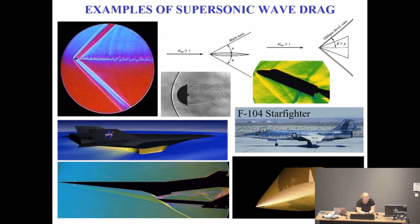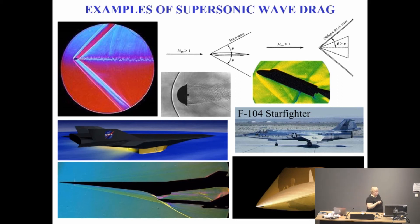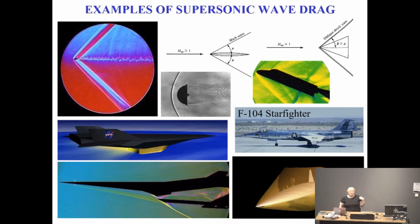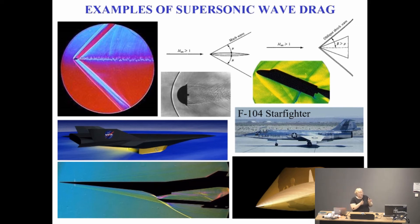What happens is that in subsonic flows, the information that the boat is coming is actually known ahead of time — hence why you can see this bow wave. The faster and faster we go, it actually doesn't have much effect. In other words, by the time we get to supersonic, before you know it, it's actually gone past. So if you were standing on the ground waiting for a supersonic aircraft to fly over you, you wouldn't hear it coming — obviously it's gone before you hear it coming.